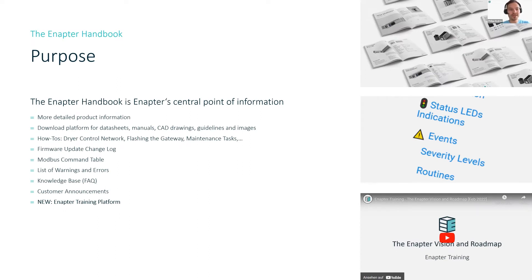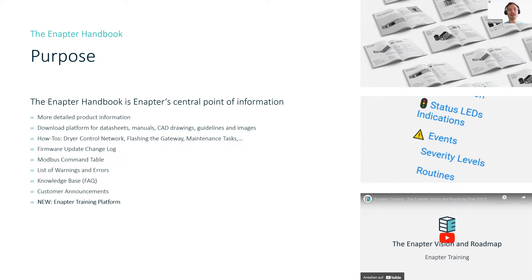Why do we have the Enapter handbook? The Enapter handbook is the central point of information. You can find detailed product information there — all our data sheets, manuals, CAD drawings, guidelines, and images. We also have how-to's, like how to set up the drive control network, how to flush the gateway, how to do maintenance tasks, and so on. You will also find the firmware update changelog, so if you want to know what happened since the last firmware update, you can look that up here.